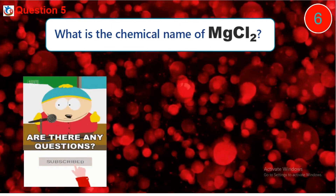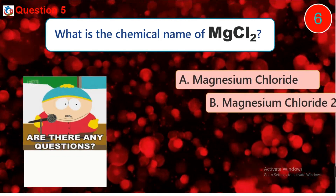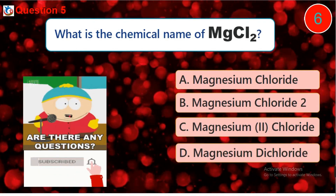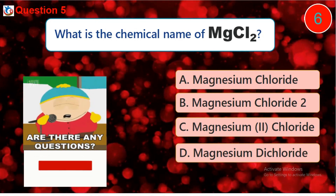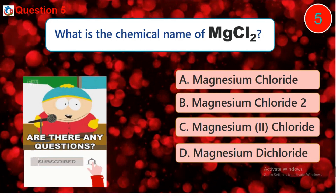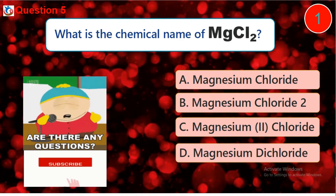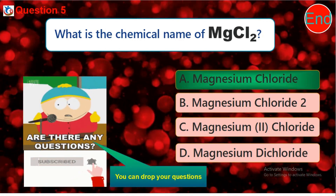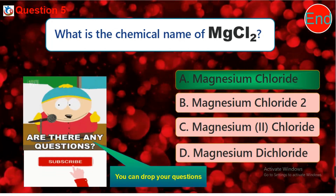Question 5: What is the chemical name of this symbol? A) Magnesium chloride, B) Magnesium dichloride, C) Magnesium 2 chloride, D) Magnesium that chloride. Please like this video, subscribe to this channel, and click the bell button.